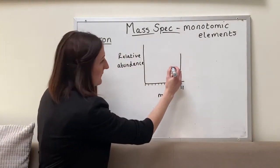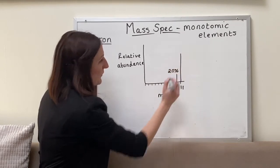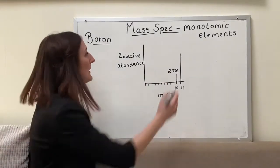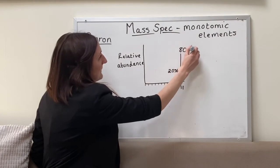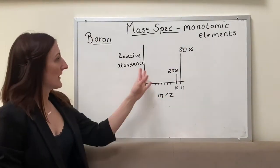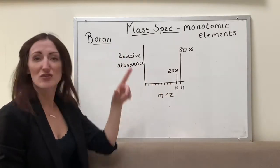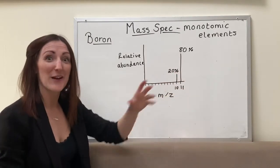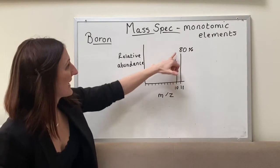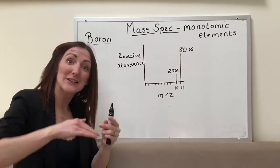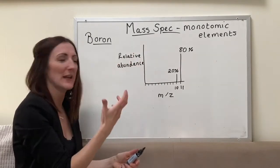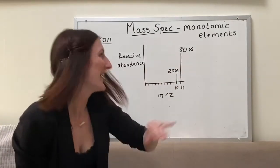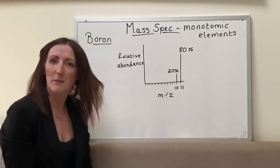So the relative abundance of our boron that weighs 10, so the relative mass of 10 is 20 percent and that which weighs 11 is 80 percent. So we can say that from our mass spec 20 percent of naturally occurring boron actually weighs 10 and 80 percent of it weighs 11. I've tried to show this with the sizes of the peaks. So the peaks do show you the relative abundance how much of it is there. You can see this peak is smaller because only 20 percent of it happens to weigh 10 and then this peak is bigger because 80 percent of it weighs 11.